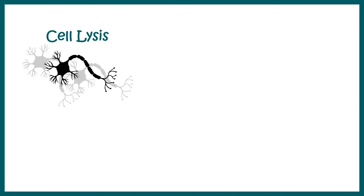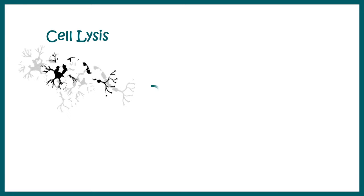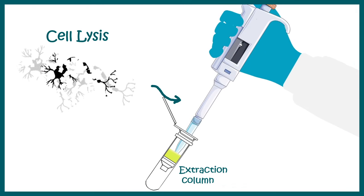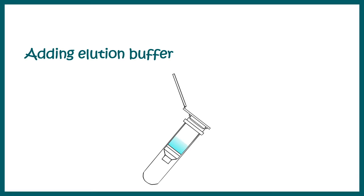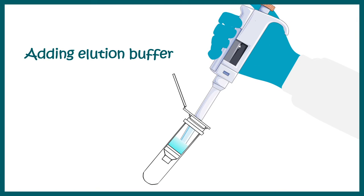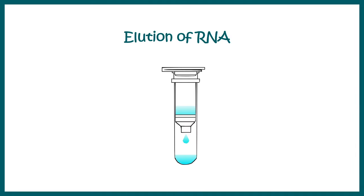So the first step for microarray would be extracting the RNA. So first we perform cell lysis and then we run the lysate through an extraction column. In this column, the RNA molecules bind to the column material. Then we add elution buffer to this column. After adding the elution buffer, the RNA is eluted and this pure RNA is collected.